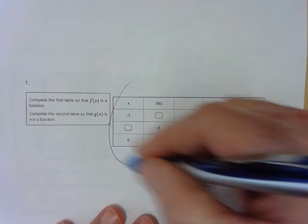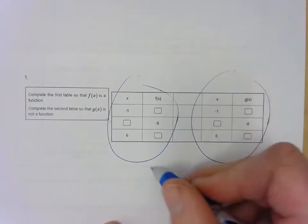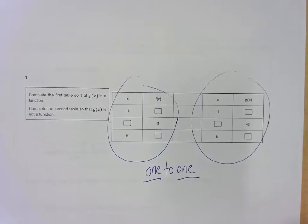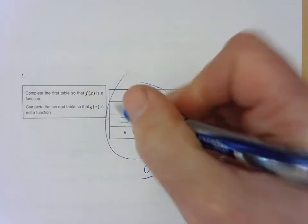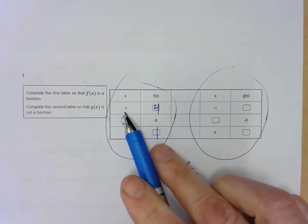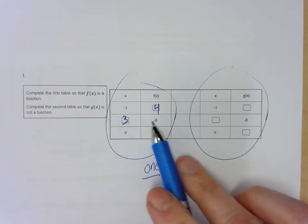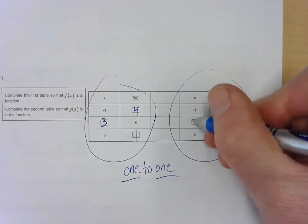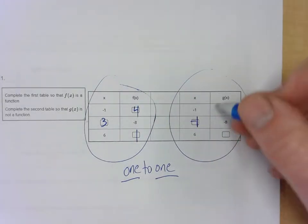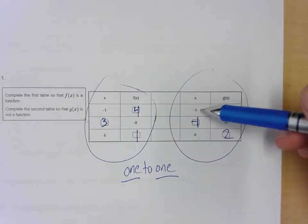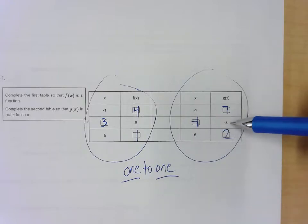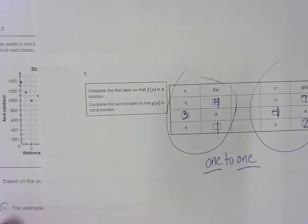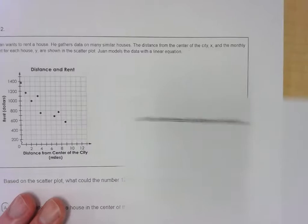Question 1: We want to make one a function and one not a function. Functions are one-to-one — for each input there has to be one output. So I put 4 for input negative 1, and 1 for input 6. If I say negative 1, you know it means 4. To make it not a function, we put negative 1 as an input again with different outputs — 7 and negative 8. So if I say negative 1, you don't know which output I mean. That makes it not a function.